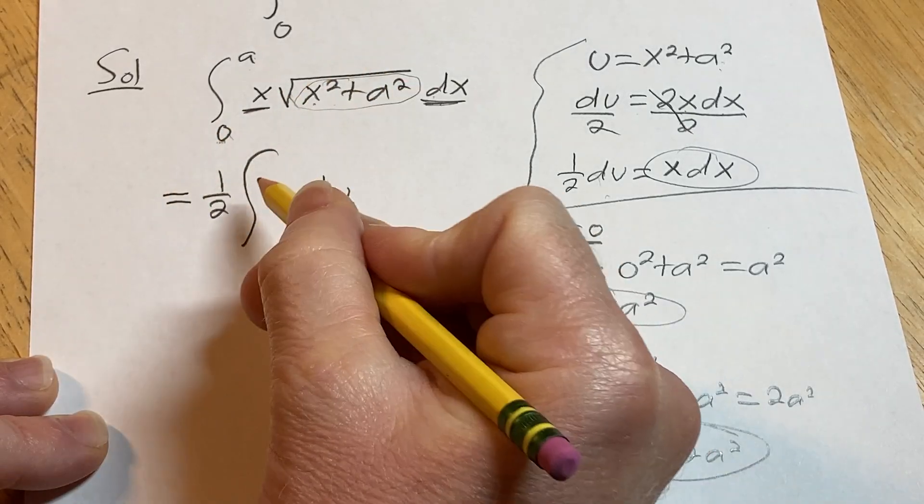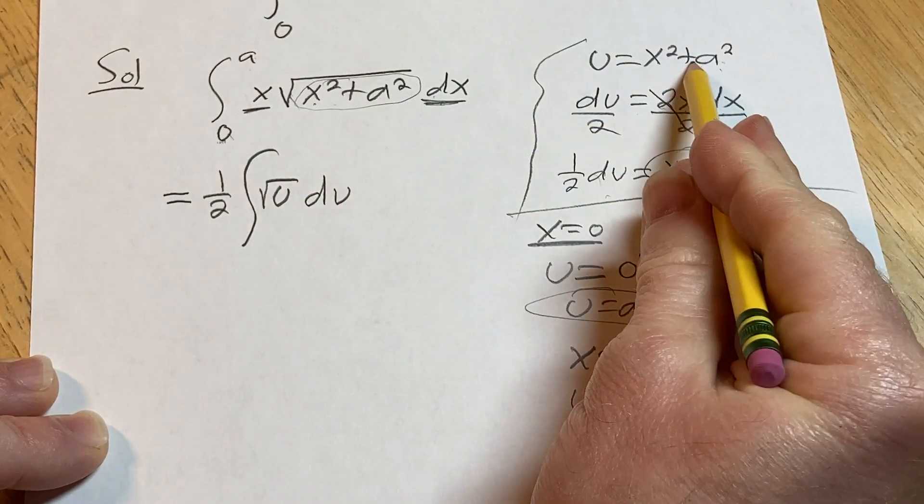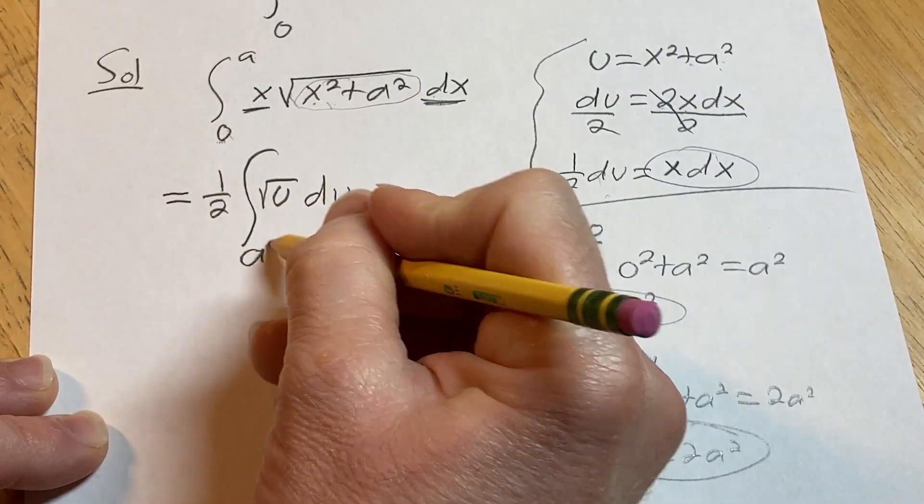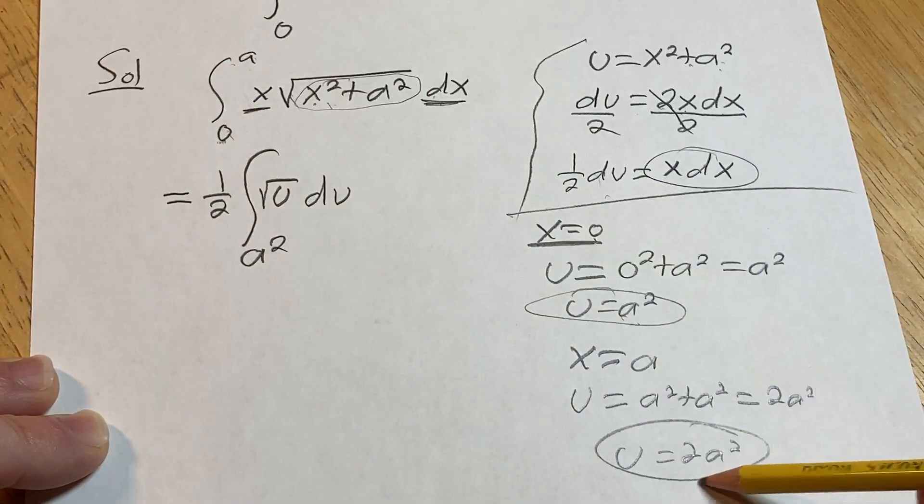When x is 0, well, let's do this piece here, square root of u. That's easy, right? Because that's our u. And then when x is 0, u is a squared. When x is a, u is 2a squared.